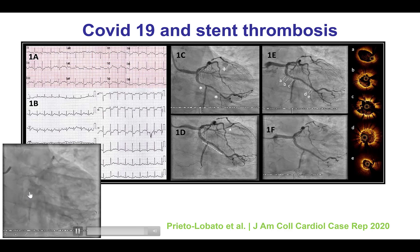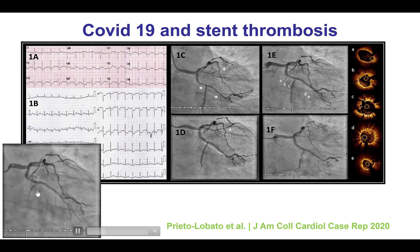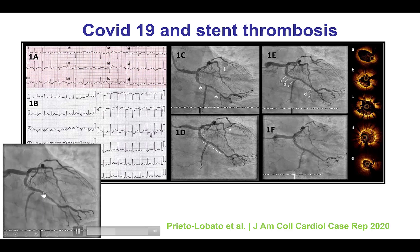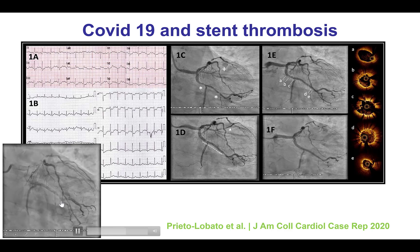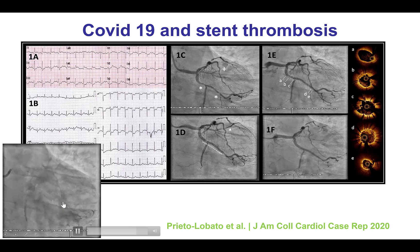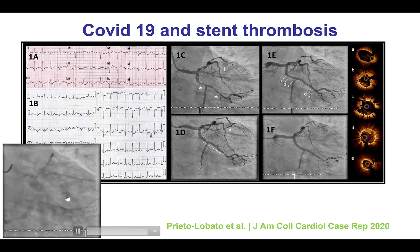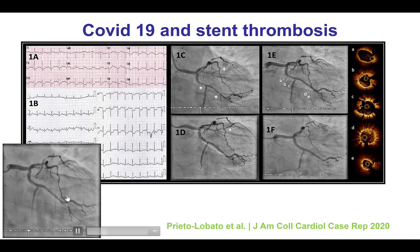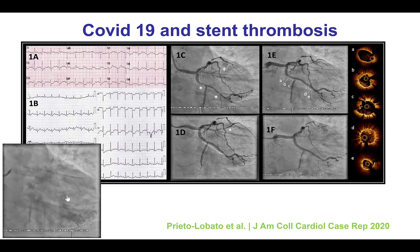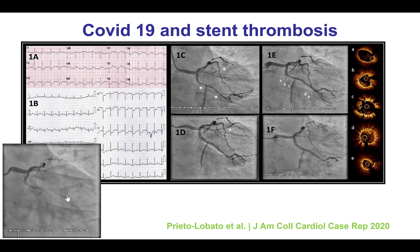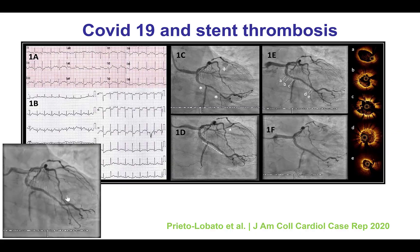This is an example of stent thrombosis in a patient who had a recent stent in the circumflex and had COVID-19 — something to always suspect. Some COVID-19 patients have had very high thrombus burden, both in the coronary and other arterial beds.